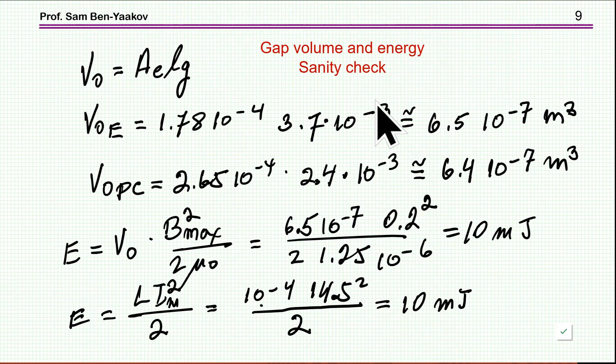So, now, let's go into this issue of the gap volume and energy in the gap. From the AE given for the core and LG that we've just calculated, I can find out that the volume of the air gap for the E core is 6.5×10^-7, and for the pot core, it is, well, surprise, surprise, the same thing. Well, it's not a surprise, and the reason why it's not a surprise is that most of the energy is in the air gap.